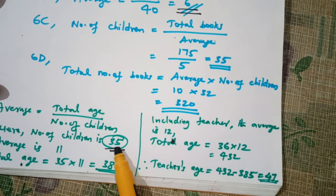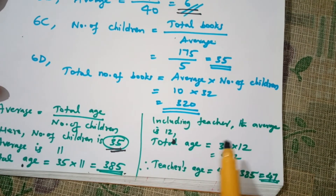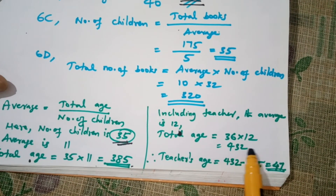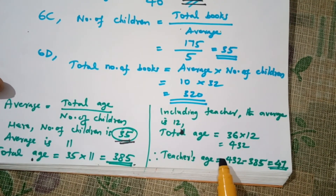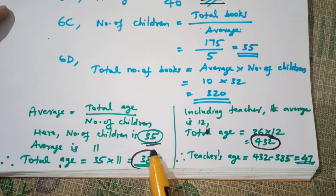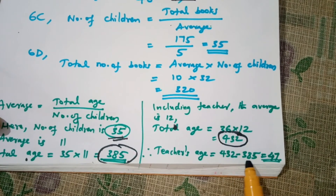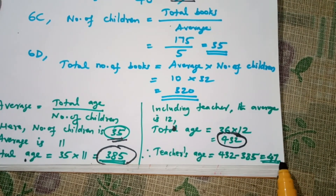The average age of a child is 35, and the average including the teacher is 36. The total age including the teacher is 432. So, 432 minus 385 equals 47. The teacher's age is 47.